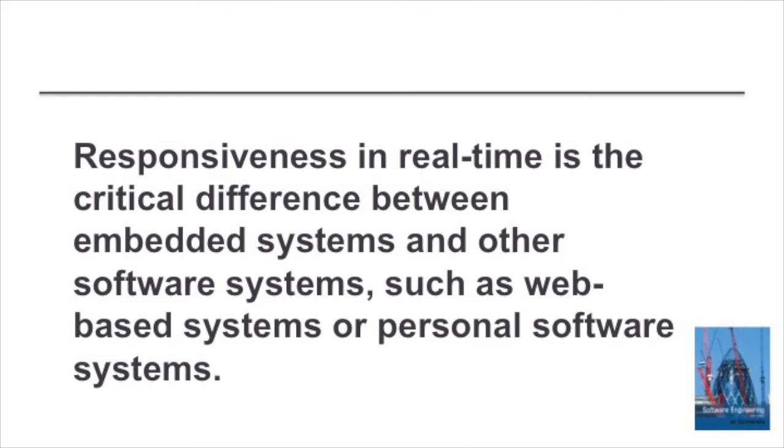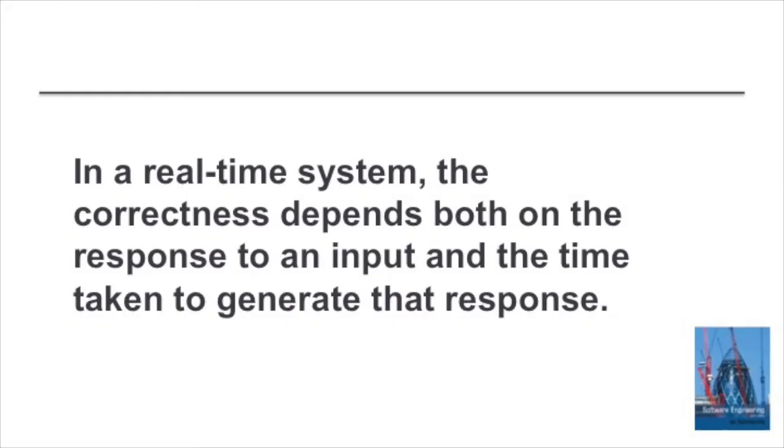The critical difference between real-time systems or embedded systems and other classes of software system is timing or responsiveness. Real-time systems have to respond to events within a certain time, and the correctness of these systems depends both on their response and the timing of that response.